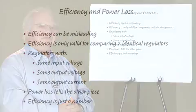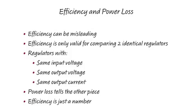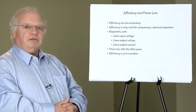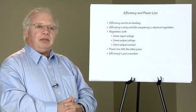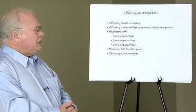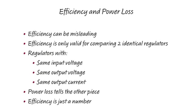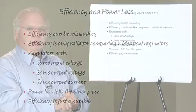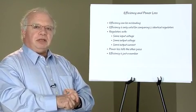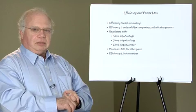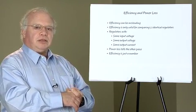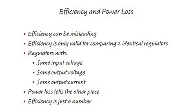Unlike power loss, efficiency is a number by itself — it's dimensionless. It's the ratio of the output power to the input power, and that can be manipulated for a particular circuit. Efficiency is only good when you're comparing two identical regulators. They have to be the same input voltage, the same output voltage, and the same output current. Otherwise, the efficiency number is manipulated by the parameters of the circuit, and it doesn't really relate back to the circuitry that we're using. Power loss is the piece that is dependent upon the circuitry; efficiency is dependent upon how that circuitry is set up.